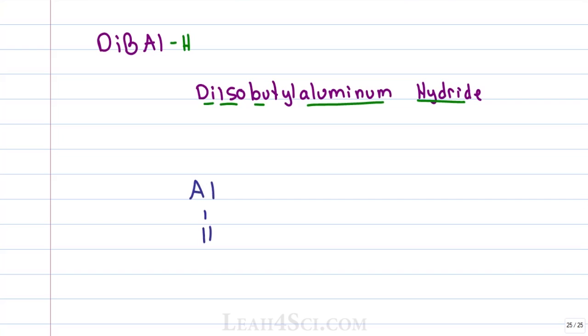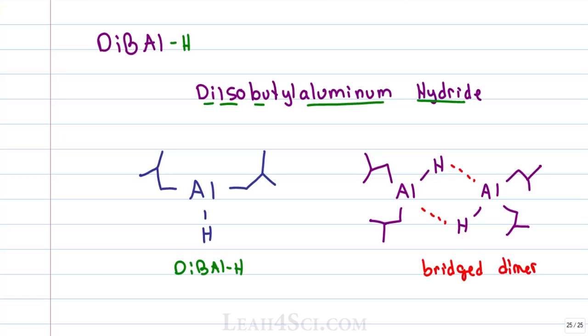We have aluminum bound to one hydrogen and two isobutyl groups. DIBAL can also form a dimer where two of these will come together and give you a molecule that looks like this. We have two AlHs with a hydrogen of one partially connected to the aluminum of the other for a bridged dimer.